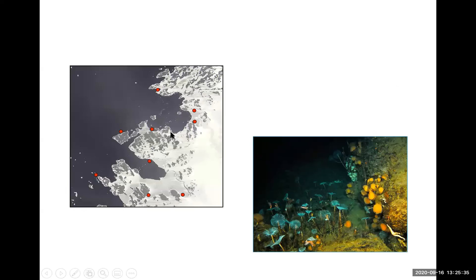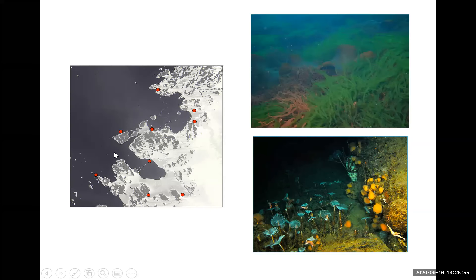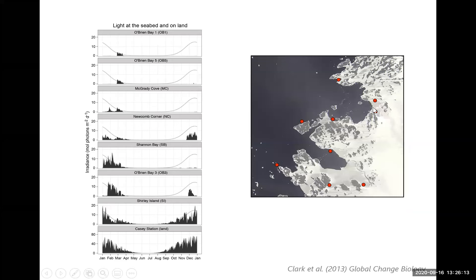Around the Antarctic coast we've got quite a gradient of times when sea ice breaks out. This is a map around Casey Station — we've got these embayments which are ice-covered for nearly the whole year, and these generally have these beautiful species-rich invertebrate-dominated communities. Further out of the bays there's a lot more light coming in because the sea ice breaks out weeks or a month earlier, and these are generally inhabited by macroalgal communities. We were really interested in how sensitive this transition is between these invertebrate and algal communities and whether it could be explained by light via sea ice.